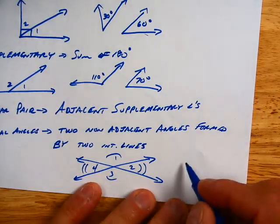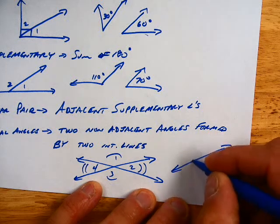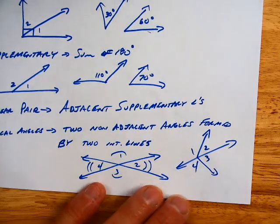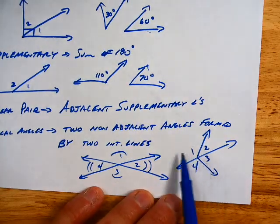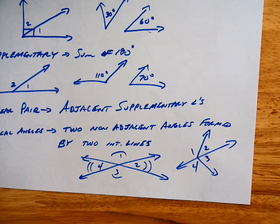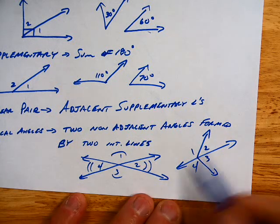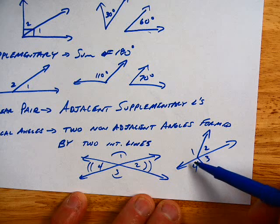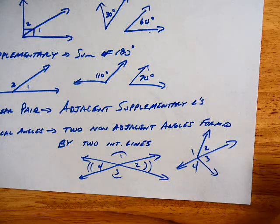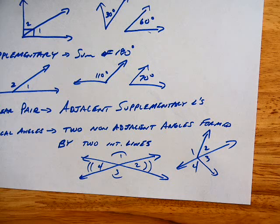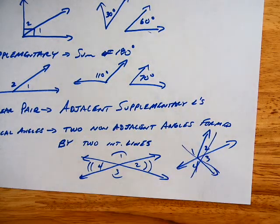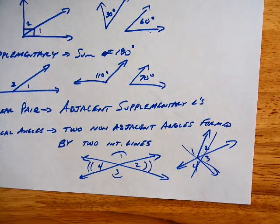One last example here, real quick. Are one and three vertical? Are they formed by two intersecting lines? Well, here's an intersecting line. Is this a line? No. It's got to be two intersecting lines. Not a line with a couple rays coming off of it. So those, there's no vertical angles there whatsoever.